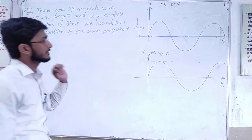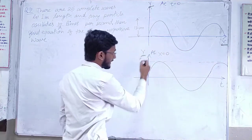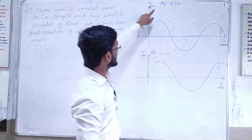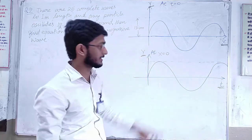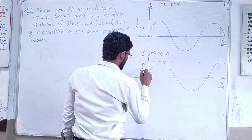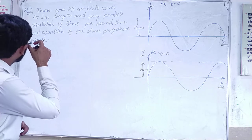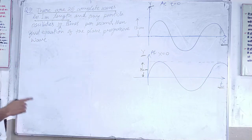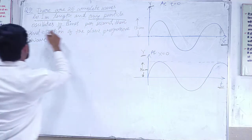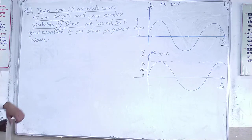This is the question. In this question, we have two graphs. One graph is y vs. x and the other graph is y vs. t. At t equal to 0, y vs. x is equal to 0. This is the distance. There are 25 complete waves in 1 meter length, and any particle oscillates 10/π times per second. Find the equation of the plane progressive wave and also label the diagram.